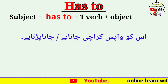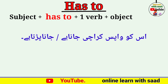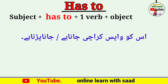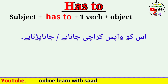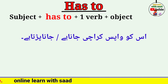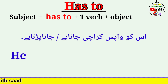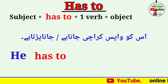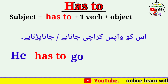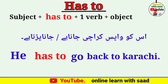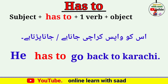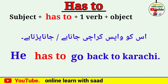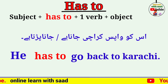پہلا جملہ ہے: 'اس کو واپس کراچی جانا ہے / اس کو کراچی واپس جانا پڑتا ہے'۔ Subject ہے 'اس کو' — انگلش میں 'he'۔ پھر 'has to'، پھر first form of verb 'go'، پھر object 'back to Karachi'۔ He has to go back to Karachi.